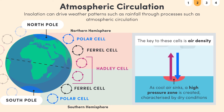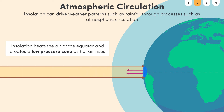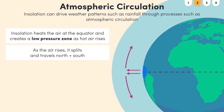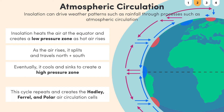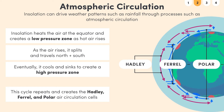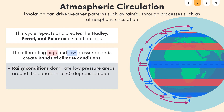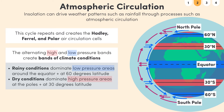In contrast, as cold air sinks, it creates a high pressure zone characterised by dry conditions. Insolation heats up the air at the equator and creates low pressure zones as the hot air rises. As this air rises, it splits and travels north and south, eventually cooling and sinking again to create a high pressure zone. This cycle repeats, creating three bands of rotating air called the Hadley, Ferrel, and Polar cells. The circulation of these three cells creates alternating high and low pressure bands, which in turn create bands of climate conditions. Rainy conditions dominate where air rises at low pressure areas around the equator and 60 degrees latitude, while dry conditions dominate where the air sinks at the high pressure areas at the poles and at 30 degrees latitude.